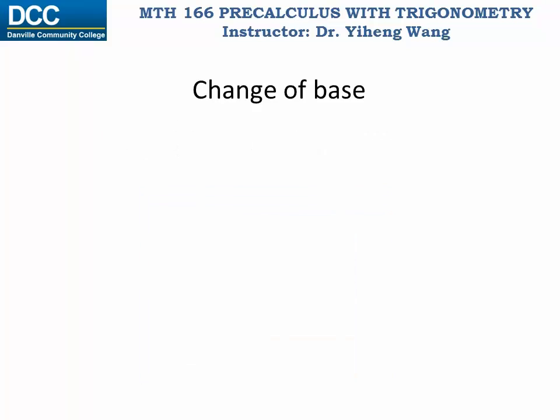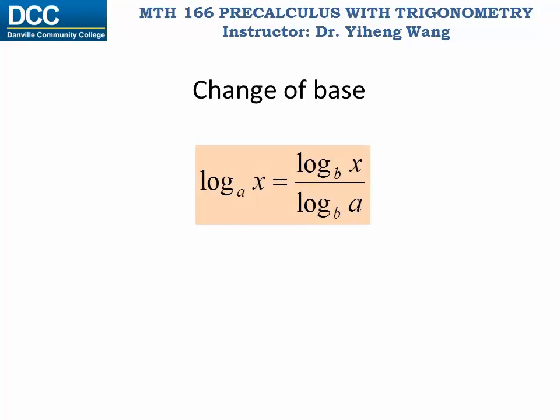For that purpose we can use the change of base property of logarithm, which states that for any arbitrary logarithmic expression log base a of x, it can be rewritten into the quotient form of log base b of x over log base b of a. Here it is important that for both the numerator and the denominator, the base b are the same. And since both a and b are the base constants for logarithmic expressions, they must be positive and cannot be 1. And for x, x must be positive.